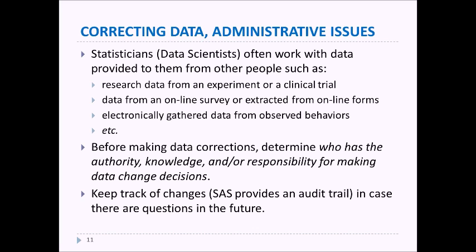Before we make any data corrections we need to determine who has the authority, knowledge, and responsibility for making these change decisions. Oftentimes it's the researcher and not the statistician. We also need to keep track of any of these changes for an audit trail in case there are questions about why these changes were made or how they were made sometime in the future.